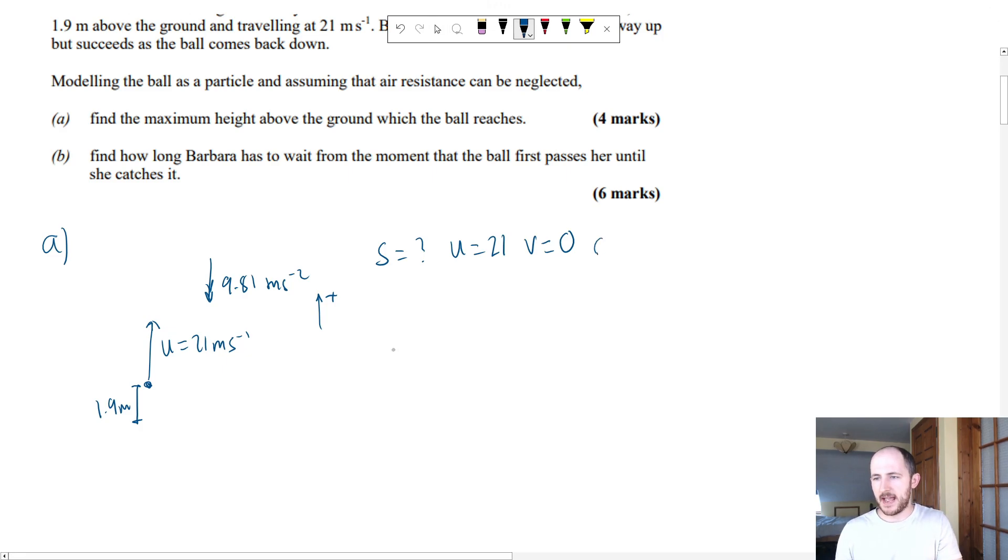U it tells me is 21. V, well, if it's the maximum height, we're going to work out how far upwards it's travelled when it reaches zero velocity. Because the idea is, if you imagine the acceleration, it's going to slow down this 21. It's going to go down, down, down, it's going to hit zero, then it's going to start coming back down. So the maximum height is when the velocity is zero.